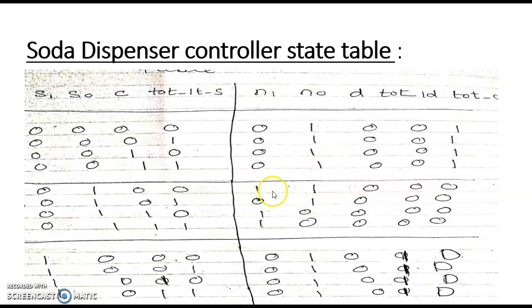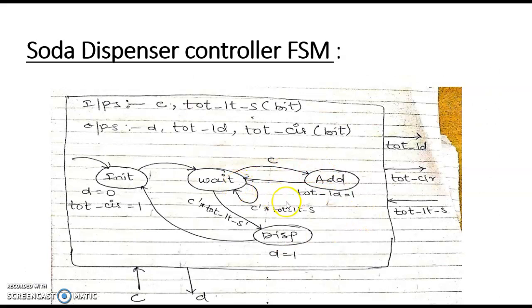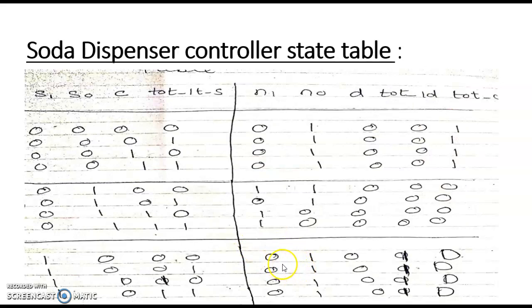That next state when TOT_LTS is 0 is nothing but the dispense state, which is the last state, 11. When it is in the 10 state — the add state — there is no meaning of C or TOT_LTS inputs here. When in the add state, it will do the addition and come back to the wait state. The important thing is D is 0 and TOT_LTE is 1, meaning after doing the addition it should be loaded — that load operation is performed here.